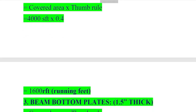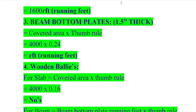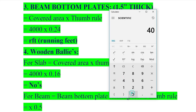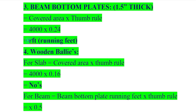Next we have beam bottom plates with thickness 1.5 inch. Covered area is 4000 square feet and the thumb rule to calculate beam bottom plates (running feet) is 0.24. Calculating: 4000 × 0.24 = 960. We require 960 running feet of beam bottom plates.